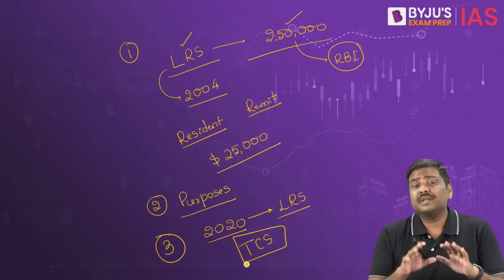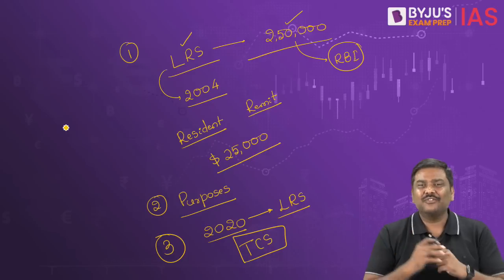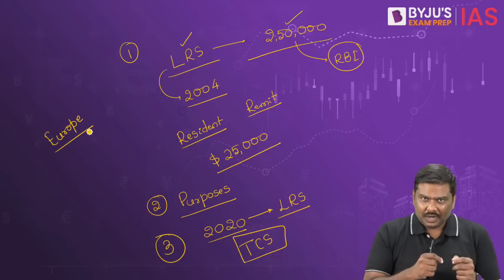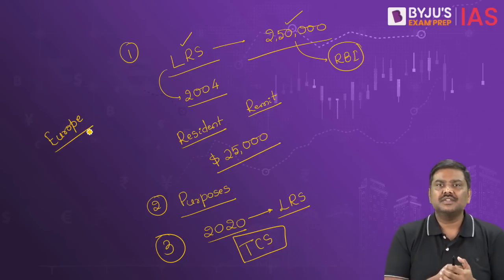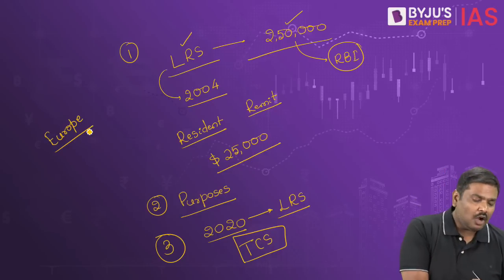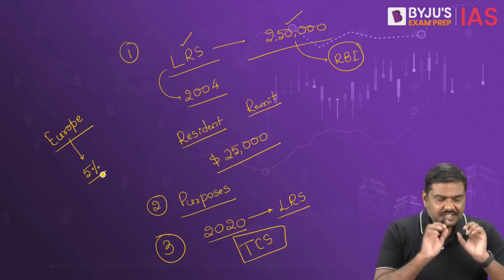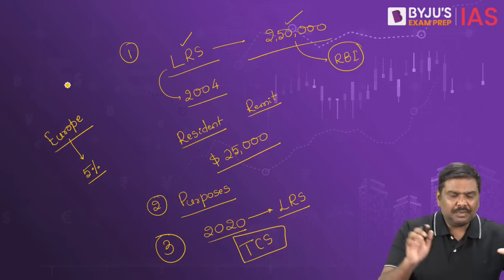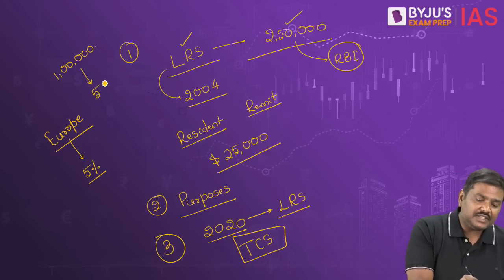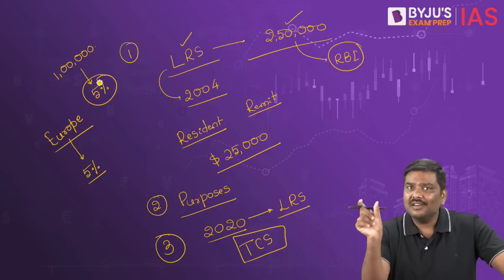What is the concept of TCS — Tax Collection at Source? Imagine you want to travel to Europe and you want to book tour packages. If the value of the tour packages crosses the threshold limit fixed by the government, the government would impose 5% TCS on this. For example, if you paid $1 lakh, then 5% of this value will be collected by the service provider and given to the government. That is the basic idea of Tax Collection at Source.